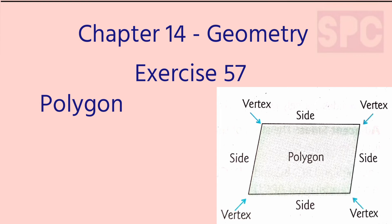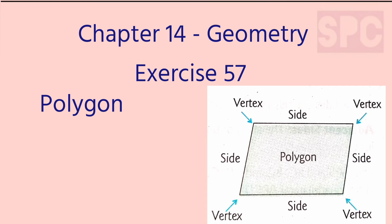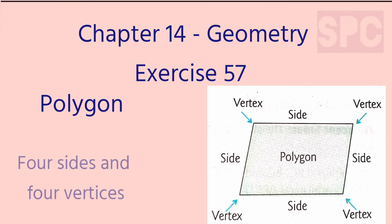Now let's understand what is a polygon. A polygon is a simple closed figure which is formed of three or more than three line segments. As you can see in this image, this is a polygon made with four line segments. The line segments which form a polygon are called its sides, and the point at which two adjacent sides of a polygon meet is called a vertex. The plural of vertex is vertices. The polygon shown here has four sides and four vertices.